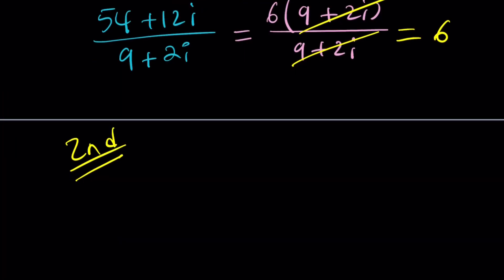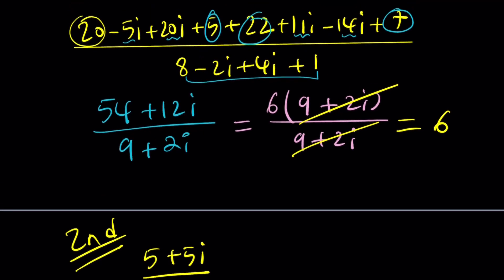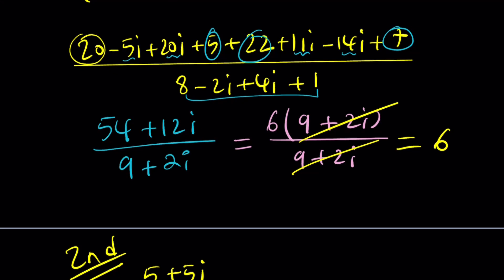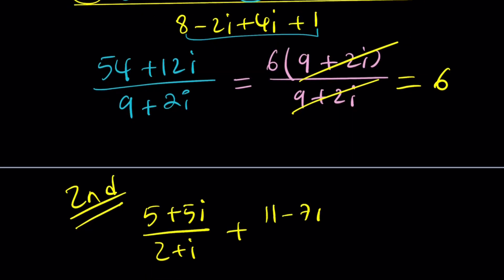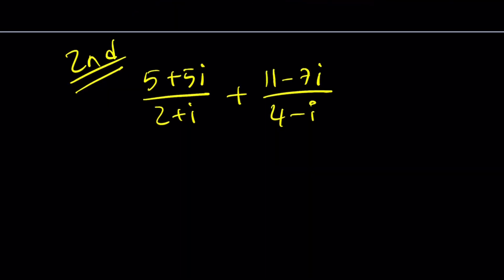Now here's what we have again. 5 plus 5i divided by 2 plus i. I forgot what the problem was. And then 11 minus 7i. I can also talk about how I came up with this problem or how you can come up with these kinds of problems so that the answer will be nice. The second method uses conjugates.